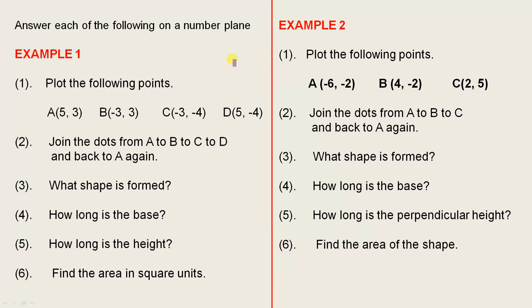So let's see what's required. Answer each of the following on a number plane. Number one, plot the following points. So we have four points to plot. Number two, join the dots from A to B to C to D and back to A again. When you do that, you actually form a closed shape.